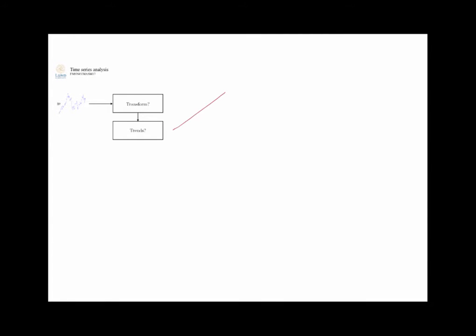The next thing to look for is whether the data has trends—for instance, a periodicity growing along a line, which is a trend. You would want to remove that. You build something that can handle this trend and then remove it. This is done in chapter 4.3. After removing the trend, you would want your data to look stationary with no trend remaining. You're looking to remove complexity by these steps. We will have tests to determine and remove the trend, but often you can see it right away just by eyeballing the data.